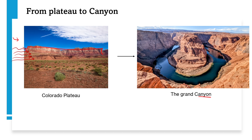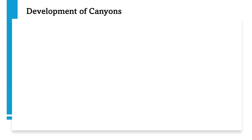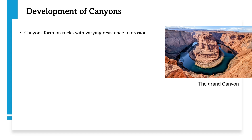A canyon is essentially a plateau that has been eroded by a river. The Grand Canyon was formed by the Colorado River eroding the Colorado Plateau. Canyons form on rocks with varying resistance to erosion — some layers are less resistant and easily washed away, while others are more resistant and harder to erode.